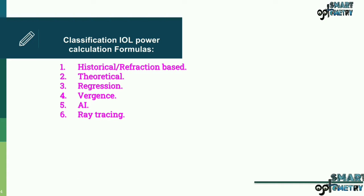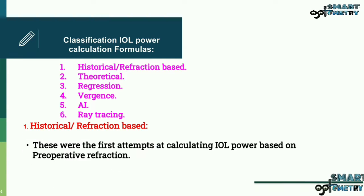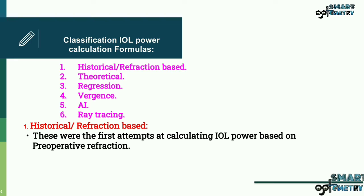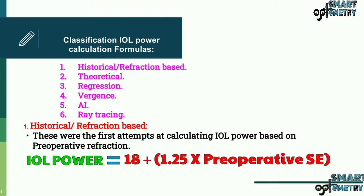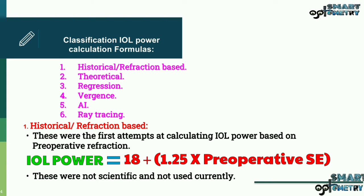Now let's discuss historical or refraction-based formulas. These were the first attempts to calculating IOL power based on preoperative spherical equivalent, like IOL power equals 18 plus 1.25 multiplied by preoperative spherical equivalent. These were not scientific and not used currently.